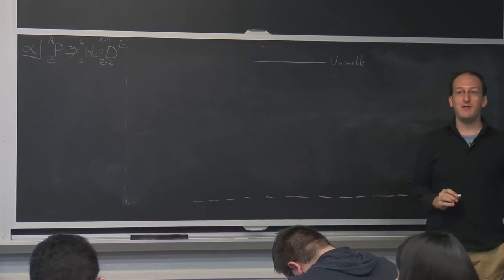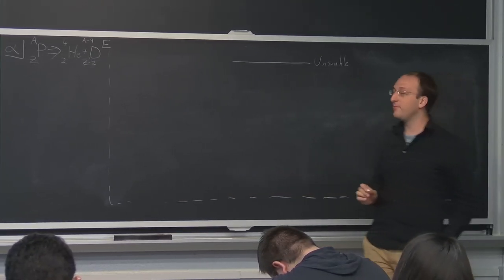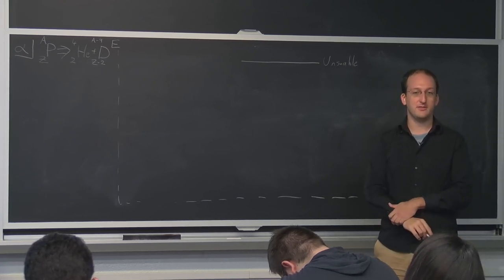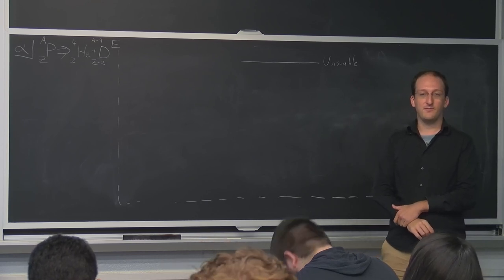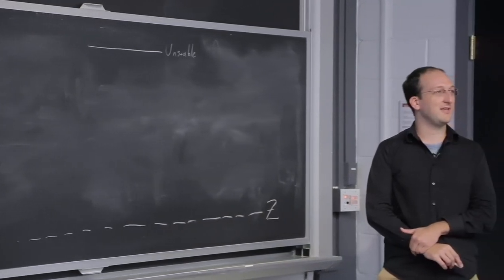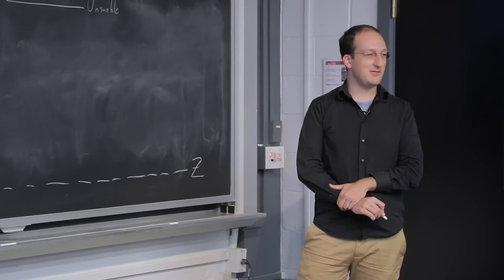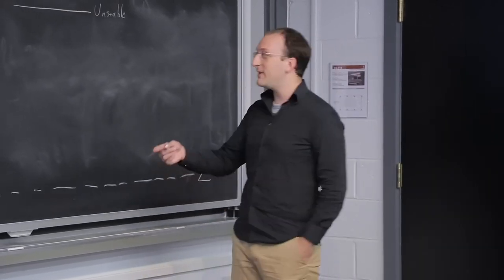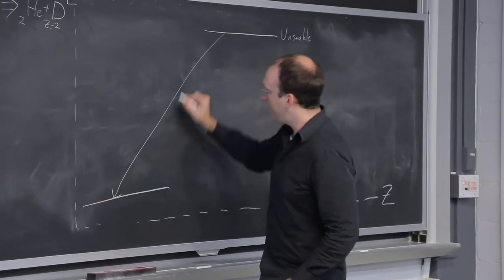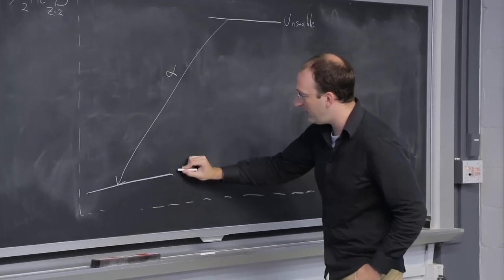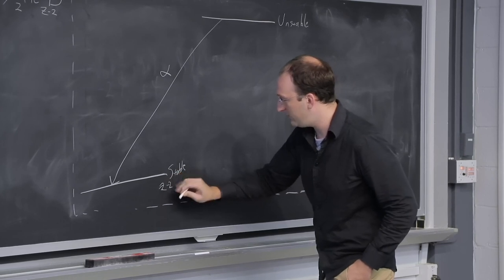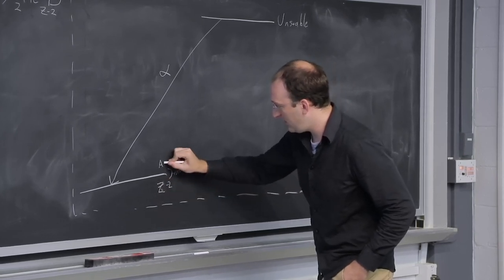So if we were to describe alpha decay on a decay diagram, where would we write the final state of this alpha decayed daughter nucleus? To the left. Something that's decreasing in z and also decreasing in energy, we would draw an alpha decay like this to the left with z minus 2 and a minus 4.